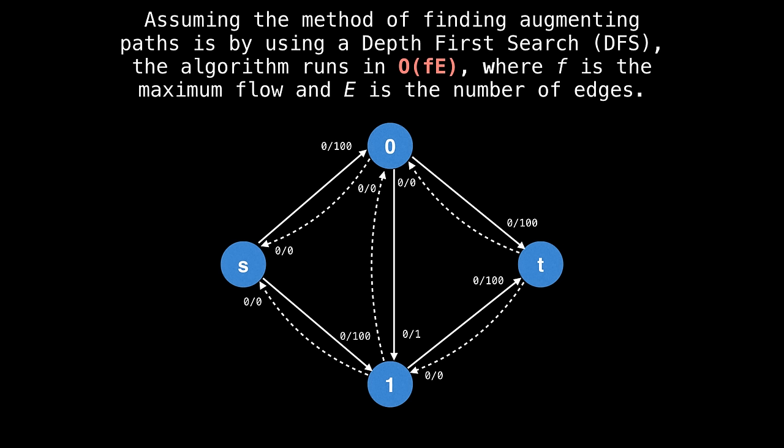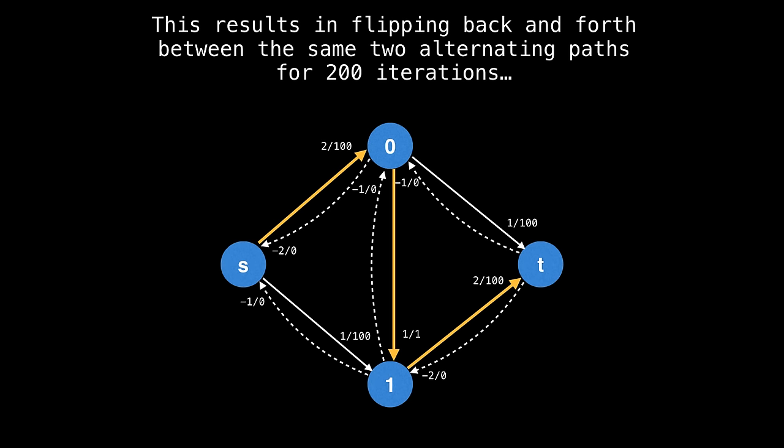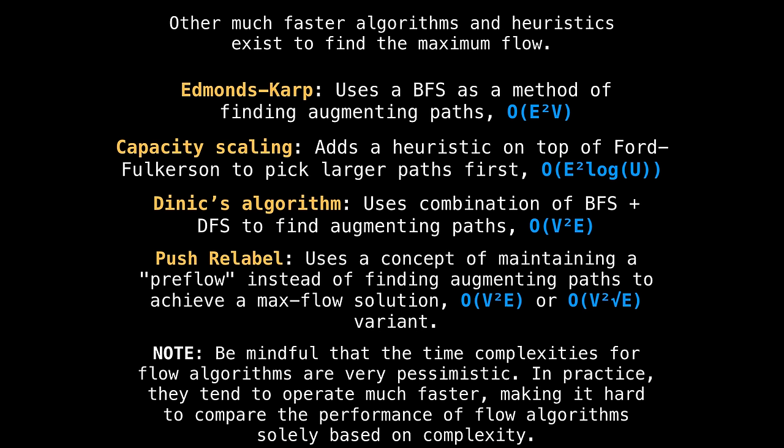Here's a graph where we can derive the time complexity. Suppose that the side edges have very high capacity values of 100. And the middle edge has a capacity of one, you can clearly tell that the maximum flow should be 200. Because you can run two augmenting paths with flow values of 100 on the top and the bottom of the graph from the source to the sink. However, recall that a depth first search traversal is essentially random. So it's possible for you to pick that middle edge with a capacity of one every single time. And what that'll do is it'll limit flow you can push from the source the sink to be one. So one is always going to be your bottleneck value. So you're never going to be able to augment the flow by more than one unit. This results in flipping back and forth between the same two alternating paths for 200 iterations, which really kills your time complexity.